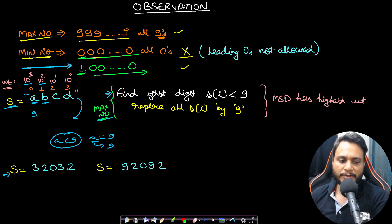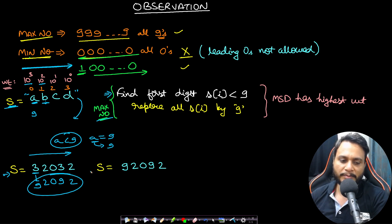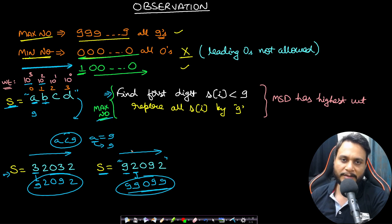For example, if s is 32032, the first digit found from left to right is 3 (less than 9), so convert all occurrences of 3 to 9, giving 92092 — that is the maximum. For another example where the first digit is already 9, move to the second digit (2), convert all 2s to 9, and that gives the maximum.